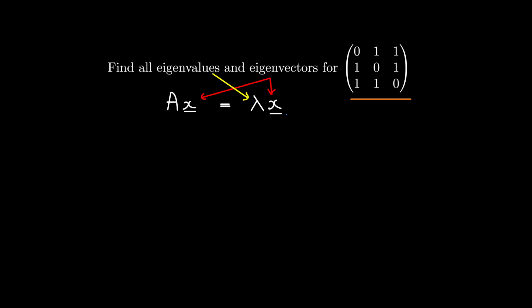What is lambda? Lambda is just a number. And what is x? It's just a vector if A has dimension n. What's important to keep in mind is that this lambda is connected to the x. For each lambda there is a corresponding set of eigenvectors. To solve an eigenvalue problem we first have to find all the eigenvalues, and then from each eigenvalue we calculate the set of eigenvectors for that value.